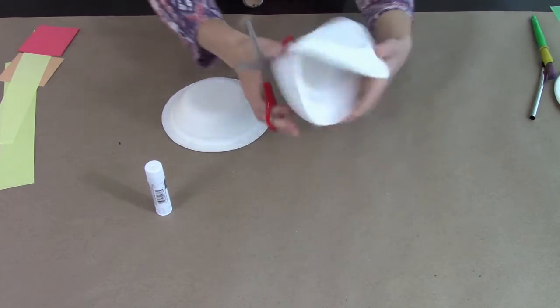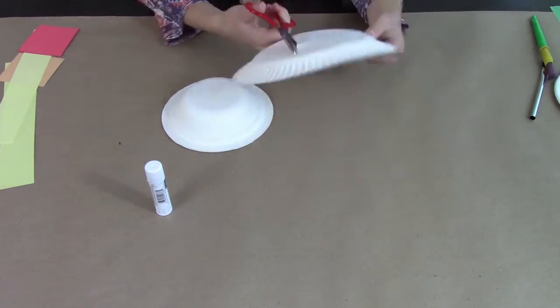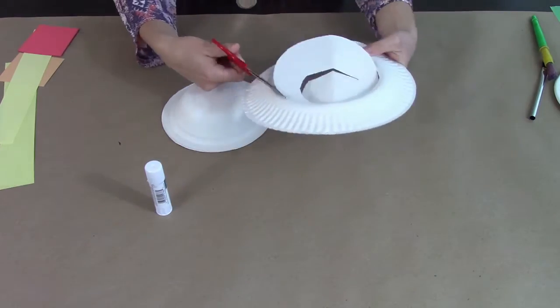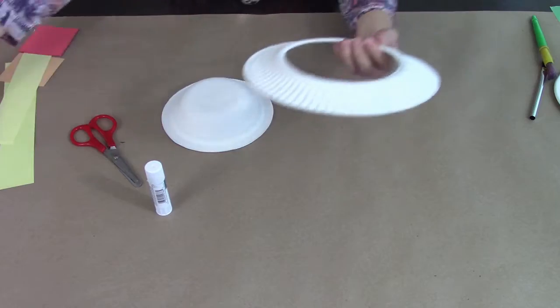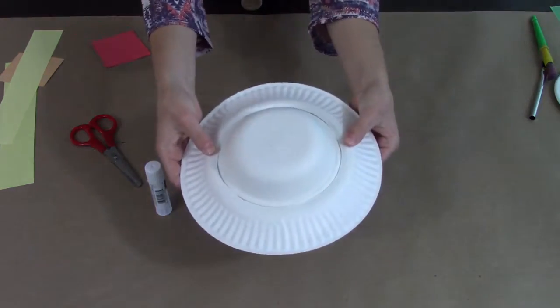So I'm going to fold my plate in half and just make a cut in it. Once I have that cut I'll be able to cut out the inside of the paper plate. I just went around the edge where the paper plate starts to bend outwards. If you do that it'll fit pretty well with your paper bowl.